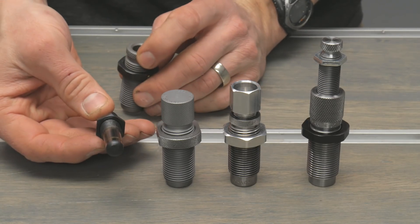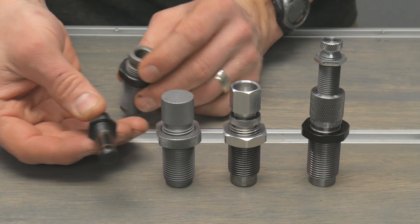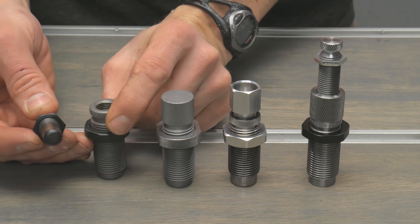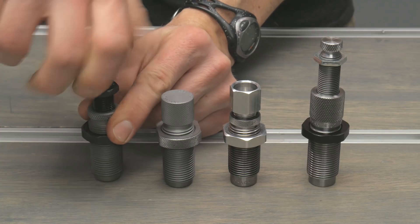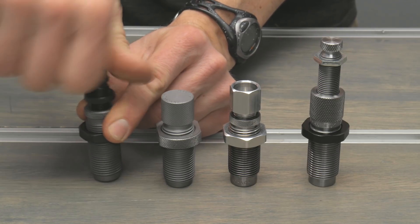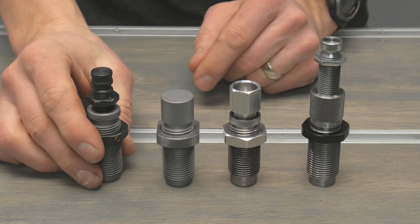This has got a removable adjustable plug. This is the type of die where you're going to set the depth of the die and then screw the expander plug down until it's at the right depth for optimal expansion and you're good to go.